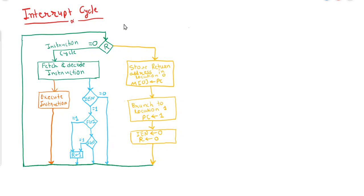In this tutorial we will try to understand what is interrupt cycle and why it is needed. In the previous video we discussed the input/output cycle — how input and output operations are performed in a computer. We learned that the clock frequency of the CPU is very high, meaning the number of instructions executed per second is very high, while the clock frequency of input devices is very low.